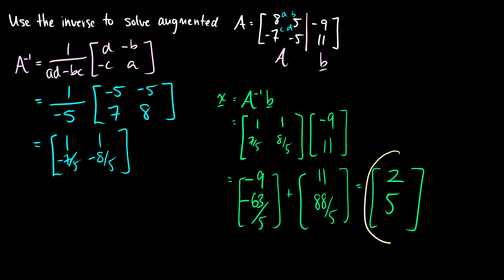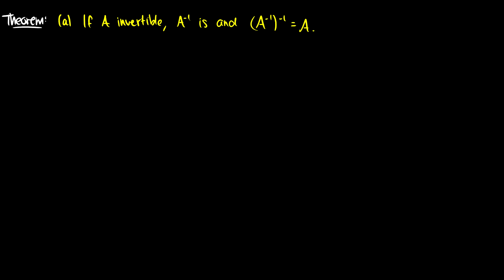You can always verify by checking that Ax equals b — take the original matrix A, multiply by x equals [2, 5], and you'll get [-9, 11] back. Now that we know how to use inverses, let's learn some extra properties of inverses.